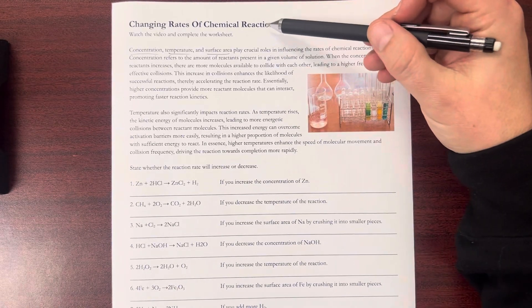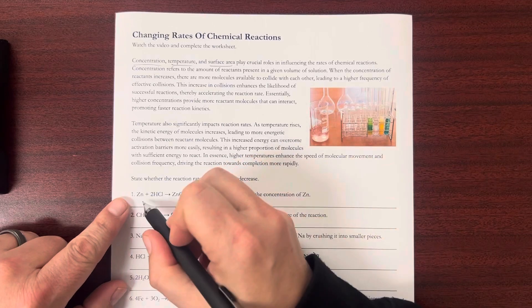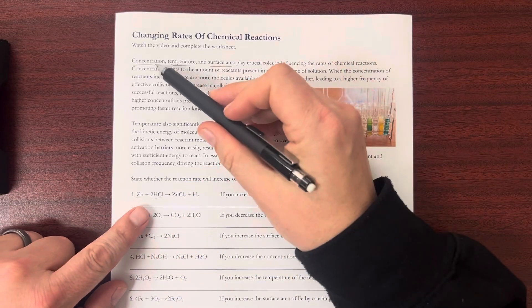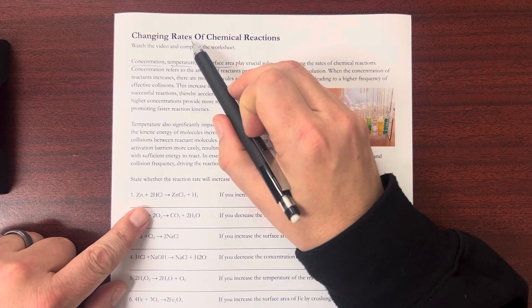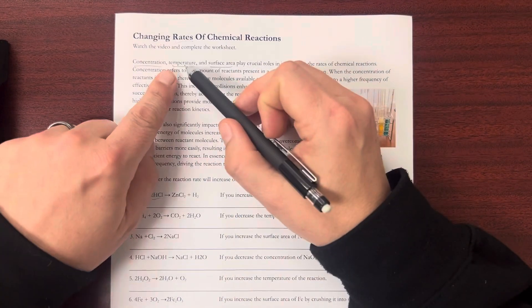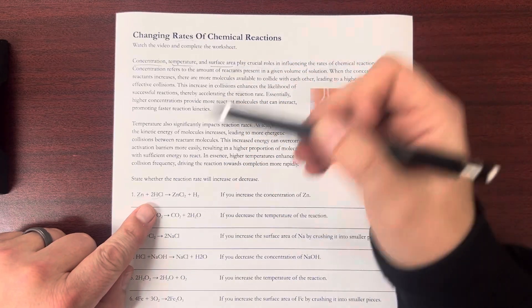Now, for a chemical reaction, if I increase the concentration of one of these products, I'm going to increase the rate of the chemical reaction. If I increase the temperature of this reaction, the rate will increase.